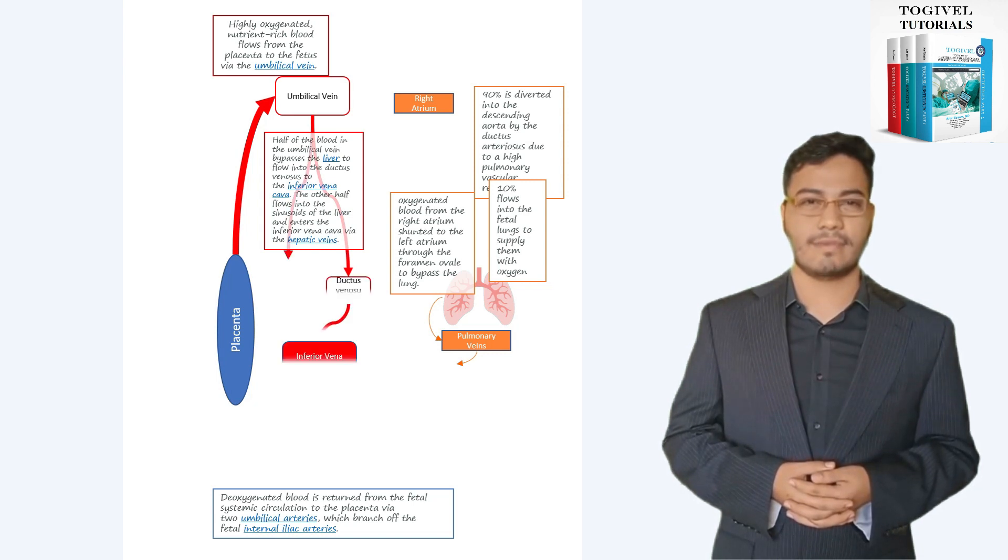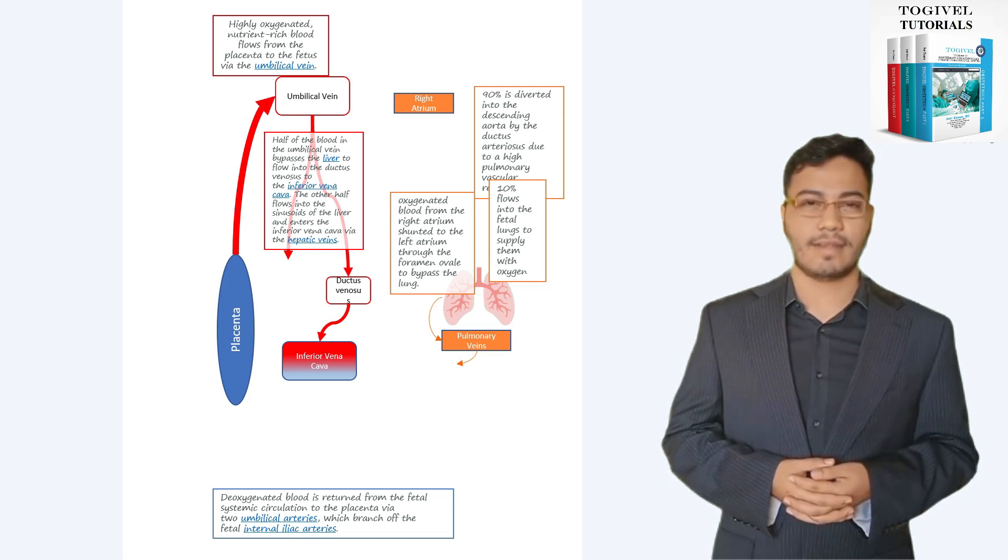The ductus venosus enters the inferior vena cava directly, and because it does not supply oxygen to the intervening tissues, it carries well oxygenated blood directly to the heart. The portal sinus carries blood to the hepatic veins, primarily on the left side of the liver, and oxygen is extracted.